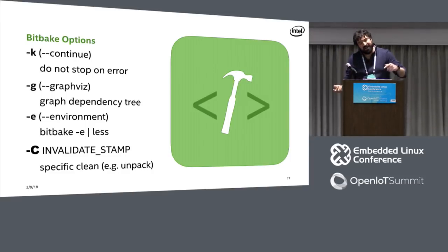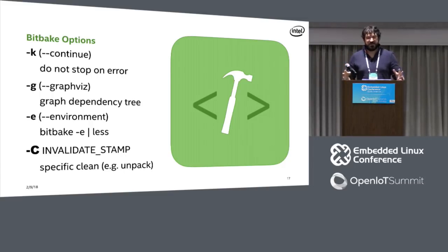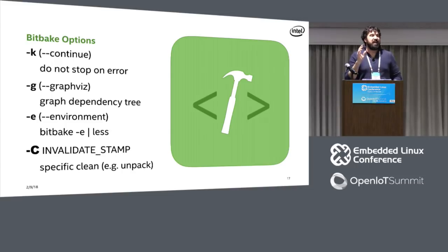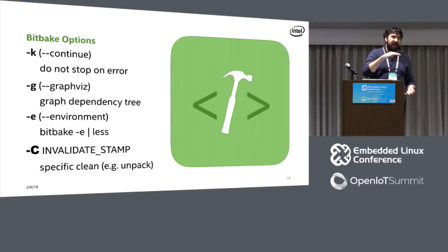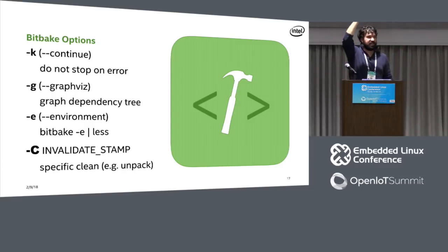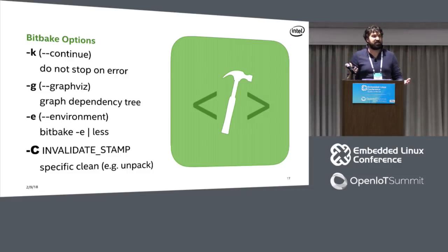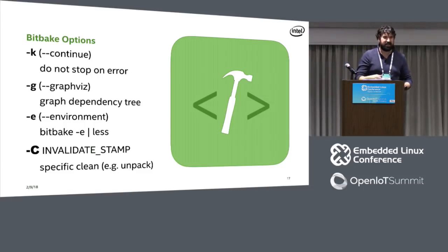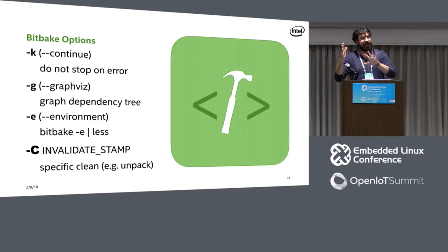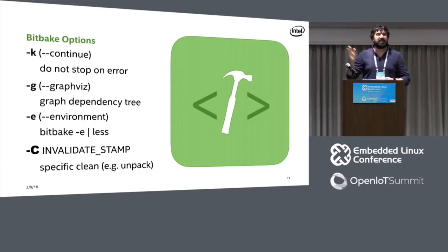Another option is dash capital C, which invalidates a stamp. S-State cache generates a hash of the input and tags that to the output. In do_unpack, for example, it looks at the input, does a magic hash on it, and if that hash has ever changed, it redoes that task. So if I want to undo do_unpack, using dash capital C will go back to that task, undo the hash, and then undo everything afterwards because all those hashes are now invalidated. You could do it for do_configure, do_install — pick your step. It's much more fine-grained than commands like clean or cleansstate — it's a very precise tool.